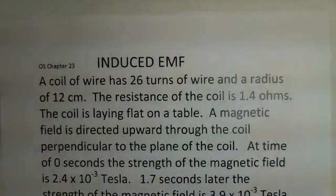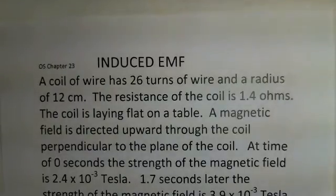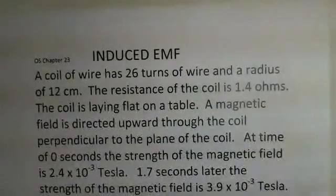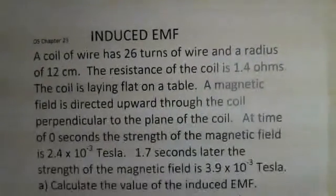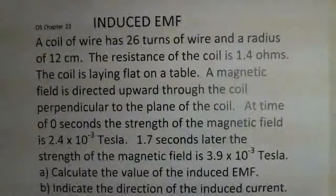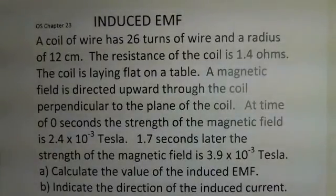At the start, at time equals zero seconds, we have a strength of the magnetic field 2.4 times 10 to the minus 3 Tesla. 1.7 seconds later, we've got an increased strength of the magnetic field, and we want to calculate the value of the induced EMF and indicate the direction of the induced current.